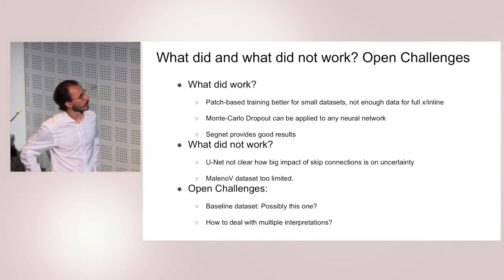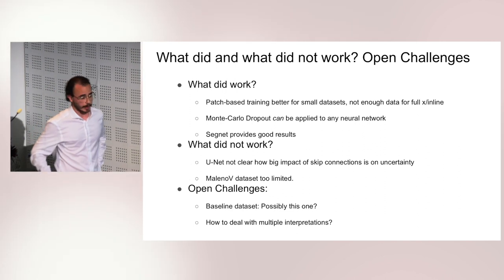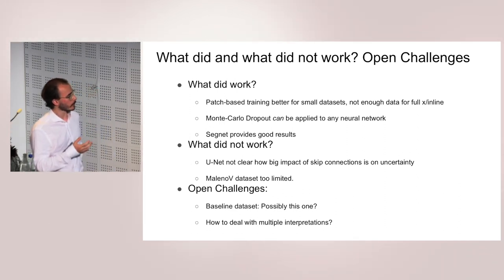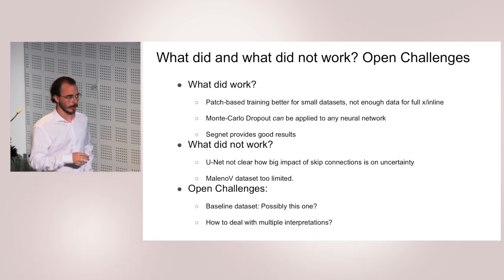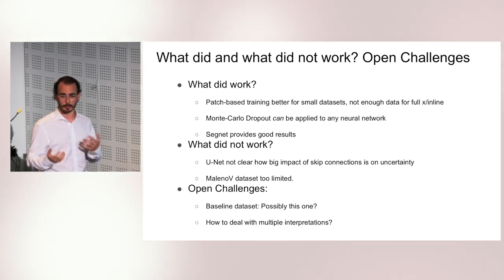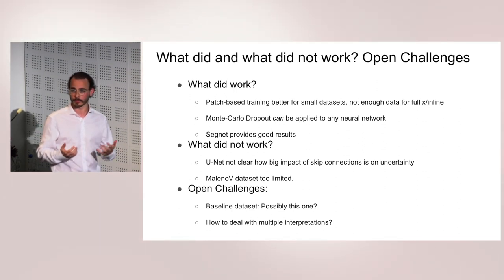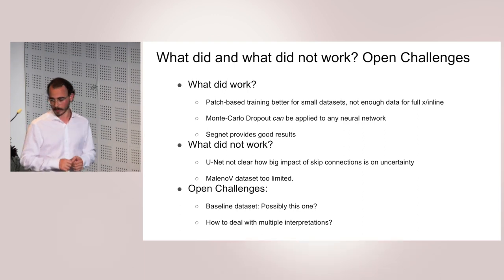Maybe also to say a bit about what did and didn't work when we tried this. We found that patch-based training methods actually work quite well for these small data sets that we have. And this Bayesian approximation should be possible to apply to any neural network, so you can easily add that to your own models. What didn't work so well is we tried it on the Malinov dataset, but that was quite limited and we quickly overfit, and there's also quite some correlation between the training and validation data. I think we really need a baseline dataset that we can use to compare all these methods, and we also have to take into account how we deal with multiple interpretations, because each geologist will have a different view. We probably need to agree as a community on what standards we want and what we want to see in a benchmark like that.